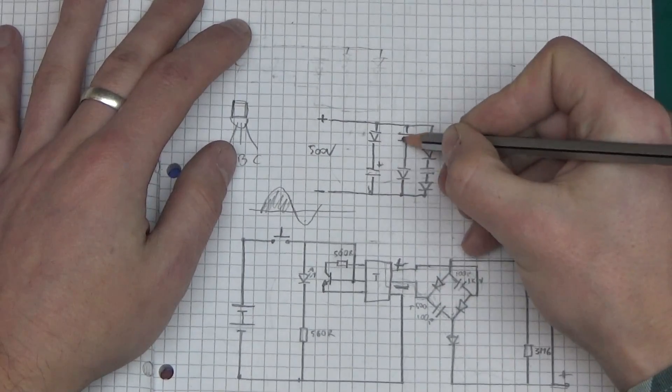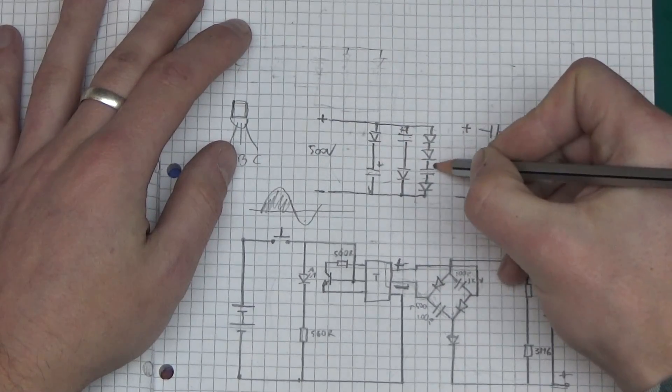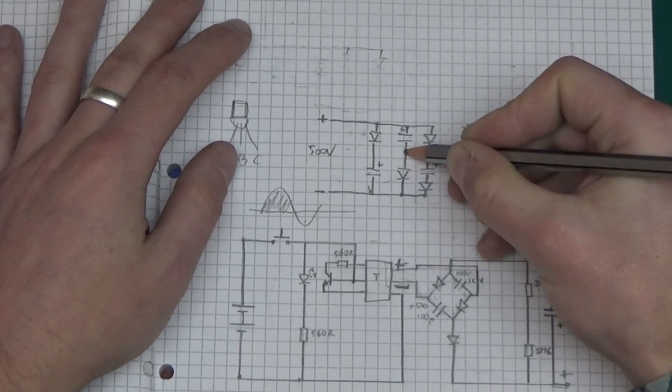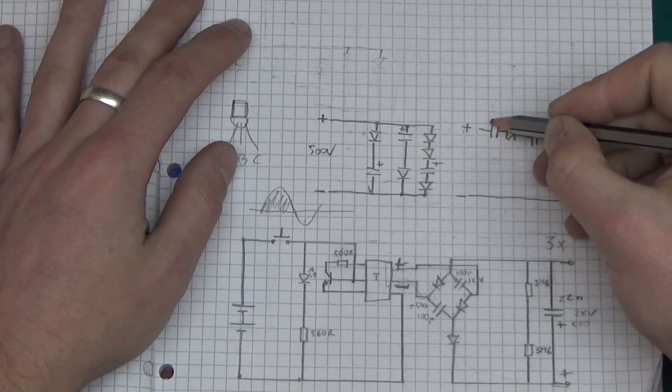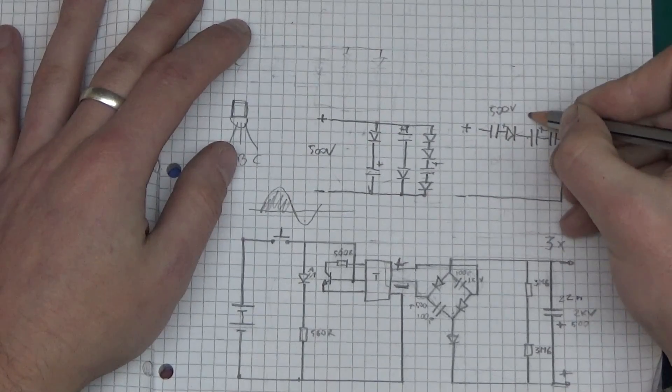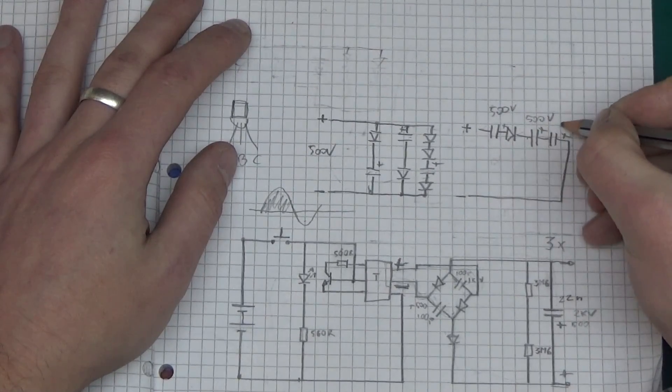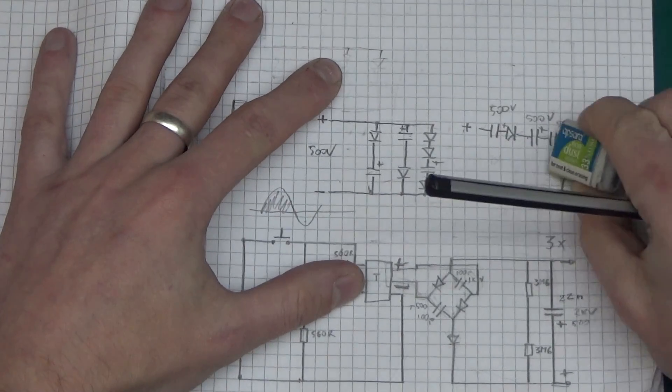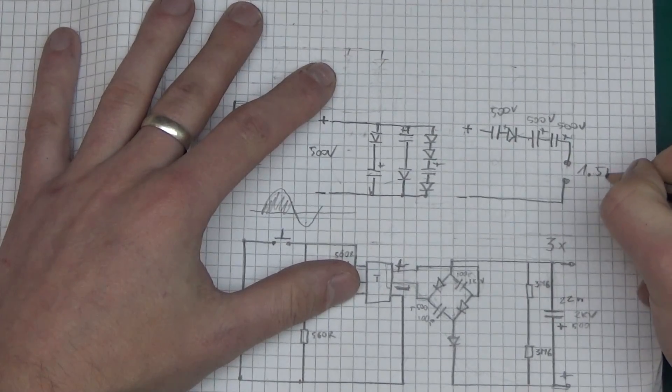But in this cycle, all those caps got charged. So in this cycle they all get discharged. But if this one's got 500 volts, this one's got 500 volts, and this one's got 500 volts, this will be 1.5 kilovolts.